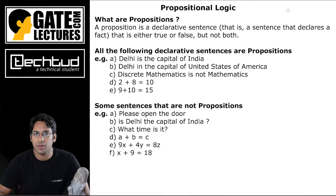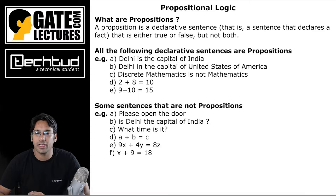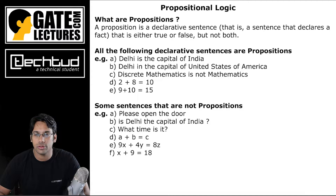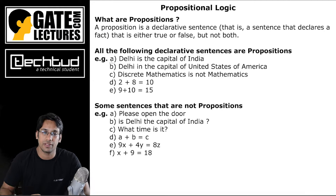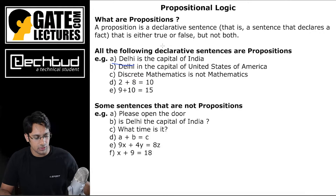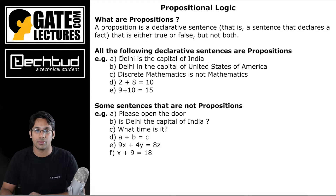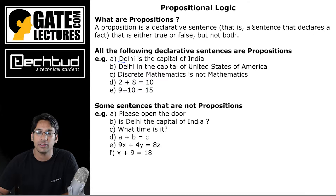Let's start with our first topic which is logic and propositions. A proposition is a declarative statement — anything which has a truth value which may be true or false, but not both. For example, if I say 'Delhi is the capital of India,' this is a proposition because it is a declarative statement and the truth value is true.